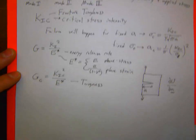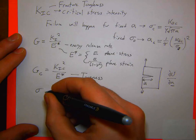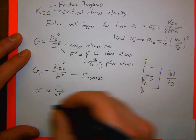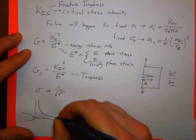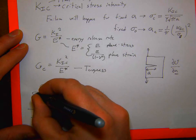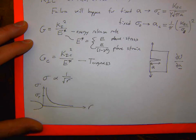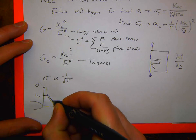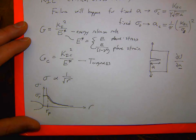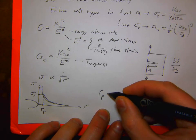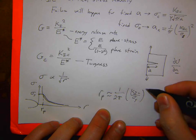For fracture, the stress field near a crack tip is proportional to 1/√r, giving a theoretically infinite stress at the tip. In reality, the stress is capped at the yield strength of the material. This gives some plastic zone radius r_p, estimated as r_p ≈ (1/2π)(K_IC/σ_Y)².